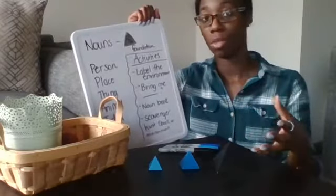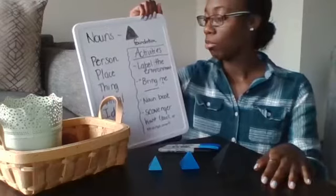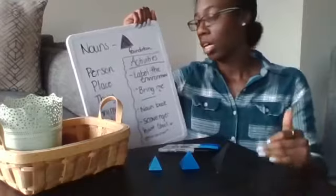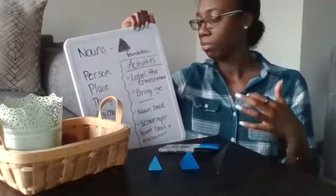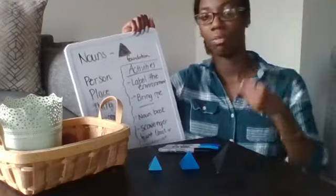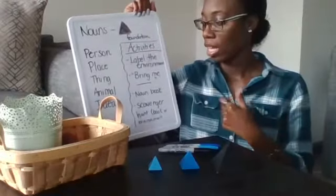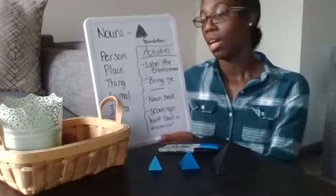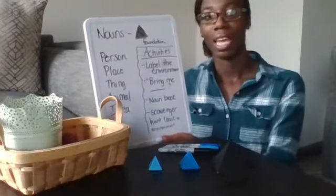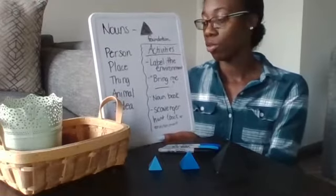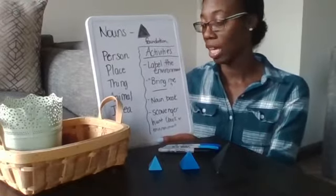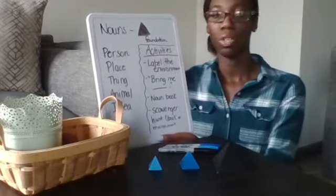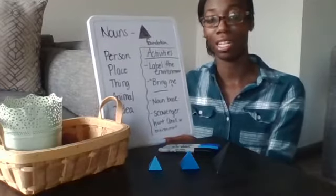If you want to engage with them, you can say 'bring me a pencil, bring me the phone'—those different types of activities that way they become more familiar with what nouns are. Similar to labeling the environment, they can create a noun book. They could find things in the house, that way if you're working or doing something else at home, they can create their own book and you can see where they are with spelling and if they can name the things in their environment.